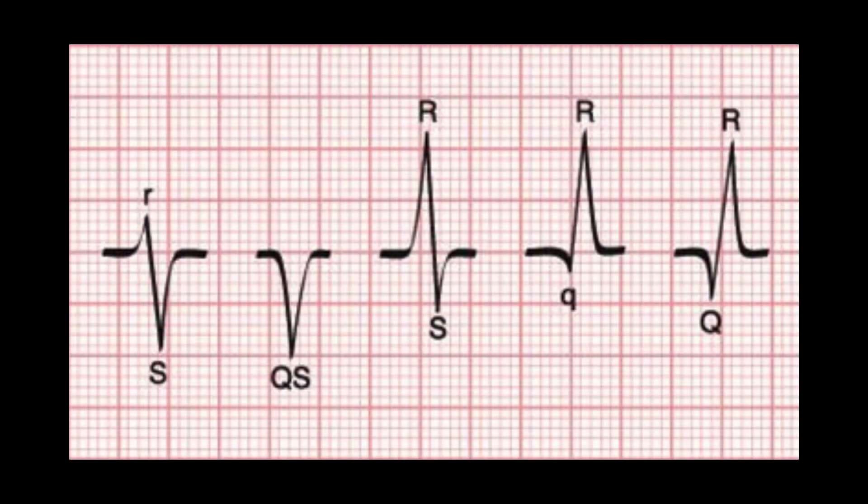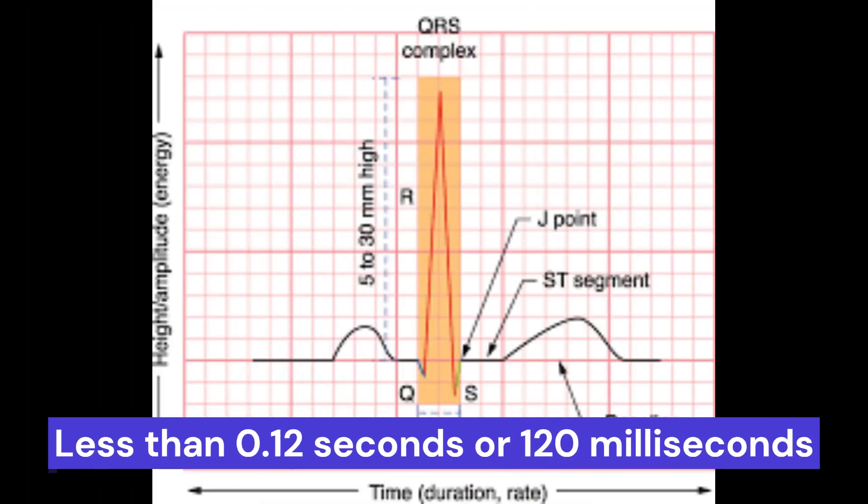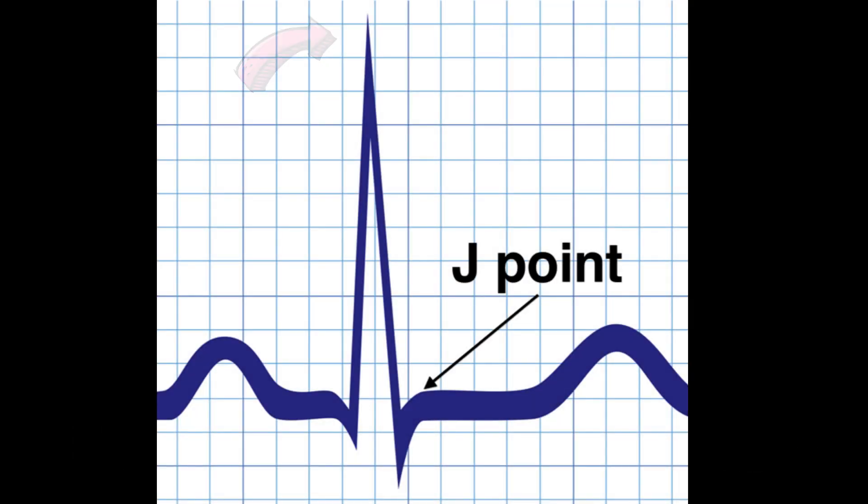If the QRS complex is missing one of the waves, here's how we measure it. For example, in the RS wave, we start the measurement here then end here. In this QS wave, we start the measurement here and end here. The QRS complex should be narrow, meaning less than 0.12 seconds or 120 milliseconds, and pointed in shape with a smooth and consistent morphology.